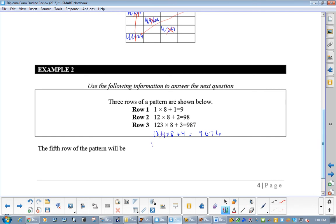So, 1234 times 8 plus 4. And this equals 9876. And then, the next one would be 12345 times 8 plus 5 is 98765.